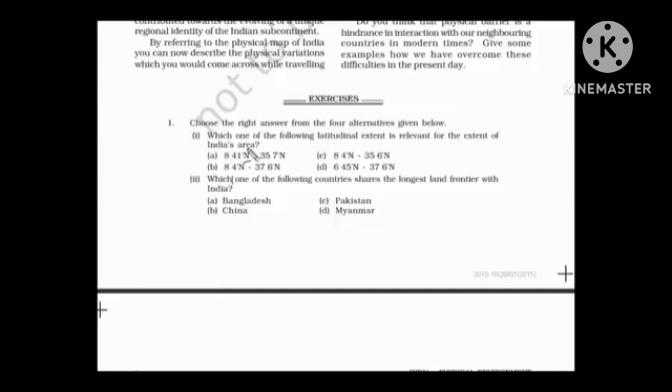Let's answer some questions and see where we stand. Which one of the following latitudinal extent is relevant for the extent of India's area? So here they are talking about latitudinal. Latitudinal is the horizontal line and the vertical line is longitudinal. So the answer is B: 8.4 degree north to 37.6 degree north.